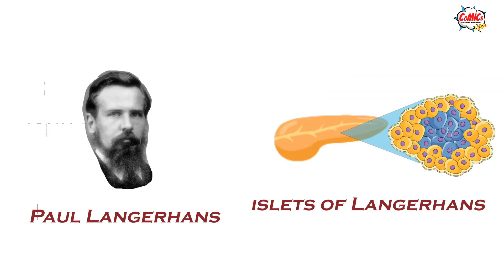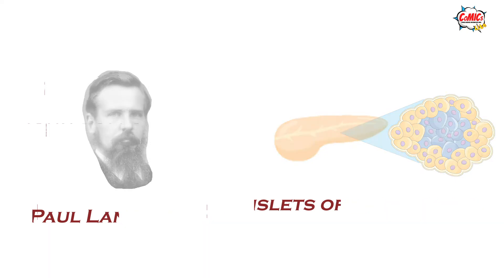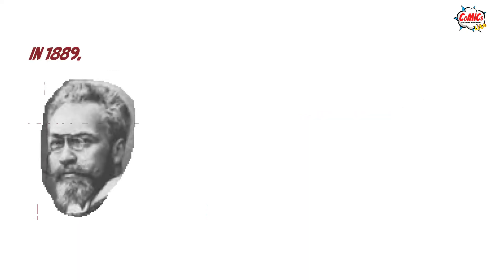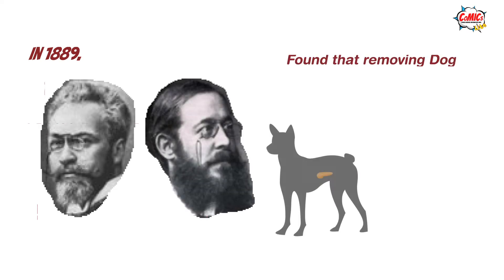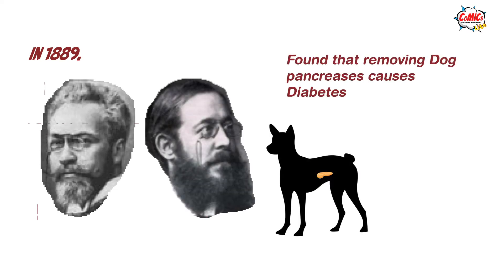Coming to more recent times, we meet Paul Langerhans in 1869, who first identified the cells of the pancreas known as the islets of Langerhans. Later on in 1889, von Merig and Minkowski found that when the pancreas was removed in dogs, it led to diabetes.